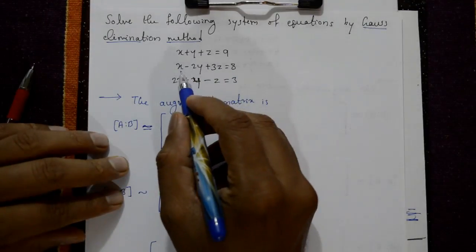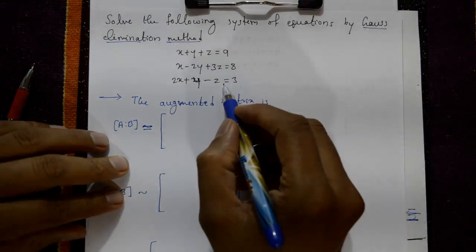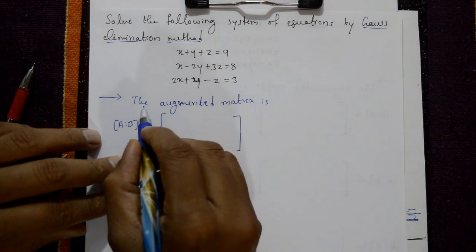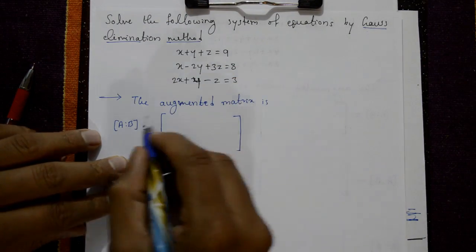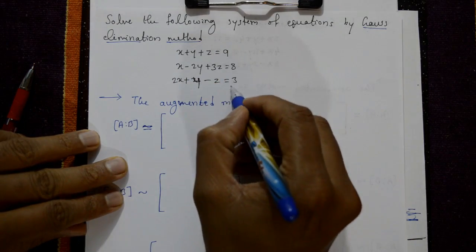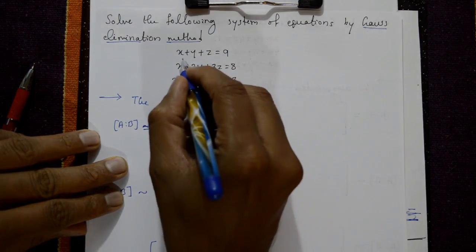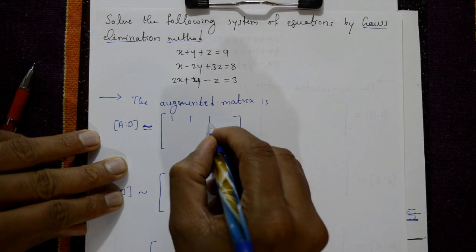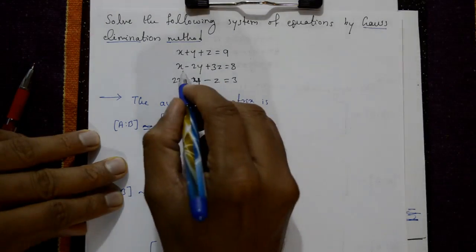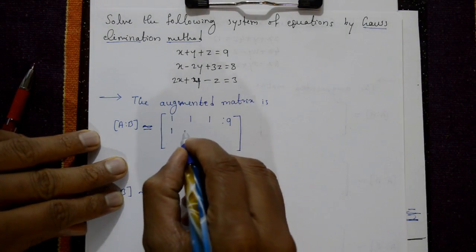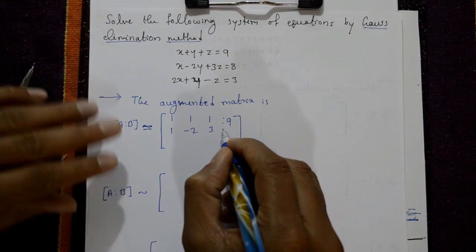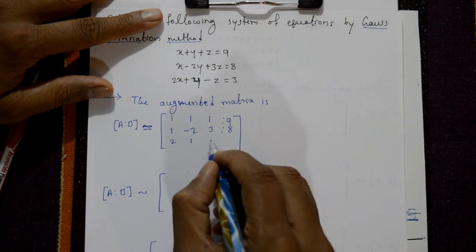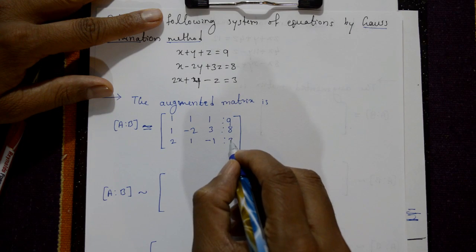In the Gauss elimination method, matrix A is reduced into the upper triangular matrix U. First, take the augmented matrix [A|B]. The coefficients of x, y, z for the first equation are 1, 1, 1, and B is 9. Second row: 1, minus 2, 3, and 8. Third row: 2, 1, minus 1, and 3.